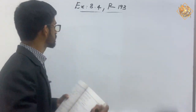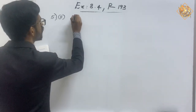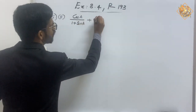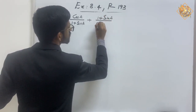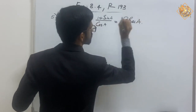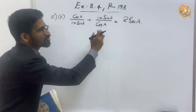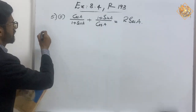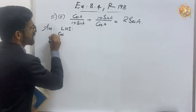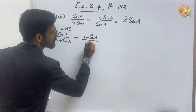Now students, let's look at question number two. The question is: prove that cos(a) / (1 + sin(a)) + (1 + sin(a)) / cos(a) = 2sec(a).